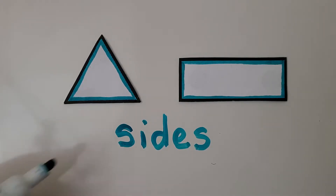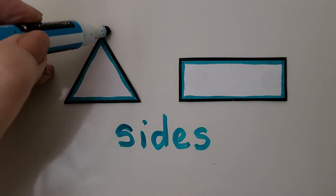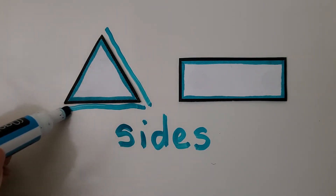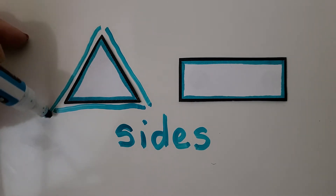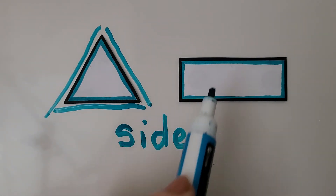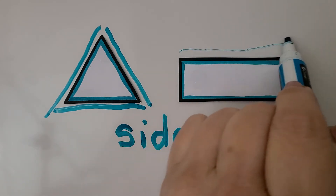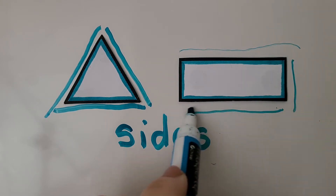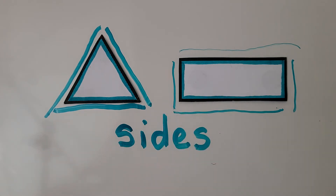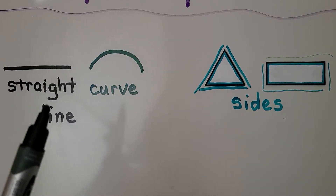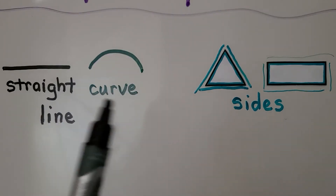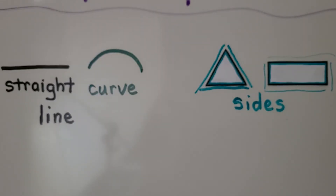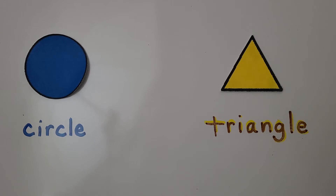Shapes have sides. This triangle has a side here, a side here, and a side here — it has three sides. And this rectangle has a side on top, a short side here, a side here, and a side here. So a line can be straight or a curve that is rounded, and a line in a shape is a side of the shape. We'll talk about sides more later on in the chapter.